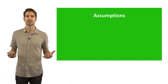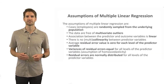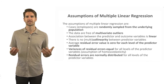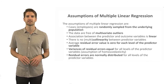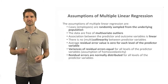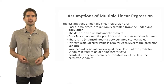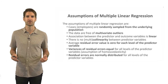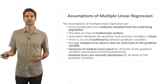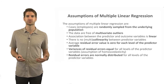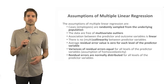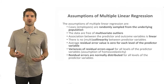The statistical assumptions underlying multiple linear regression are: first, cases are randomly sampled from the underlying population; second, the data are free of multivariate outliers; third, the associations between predictor and outcome variables are linear; fourth, there is no collinearity or multi-collinearity between predictor variables; fifth, the average residual error is zero for each level of the predictor variable; sixth, the variances of residual errors are equal for all levels of the predictor variables — the assumption of homoscedasticity; and finally, the residual errors are normally distributed for all levels of the predictor variables.